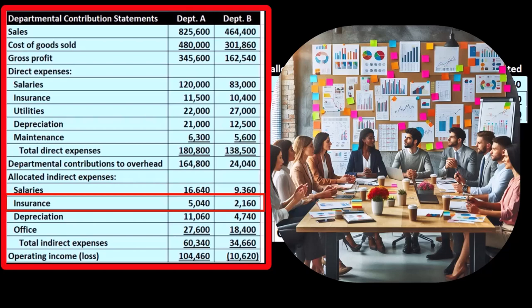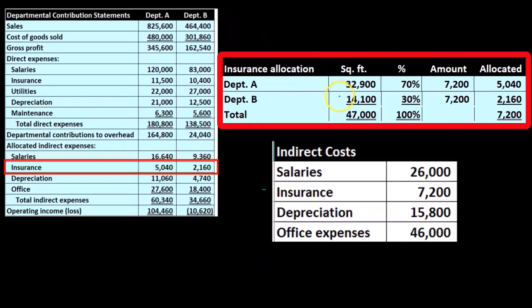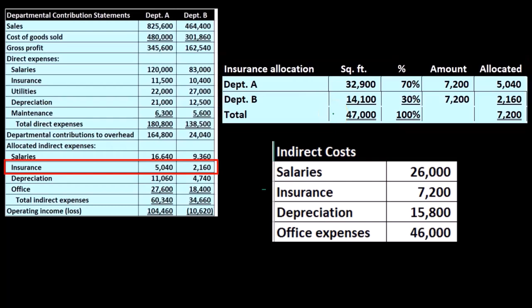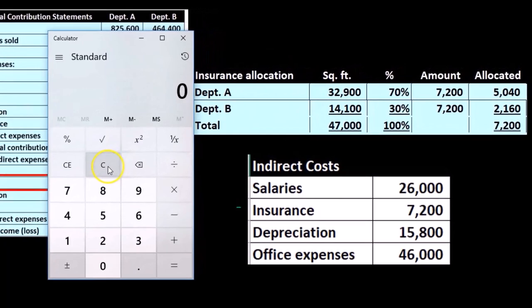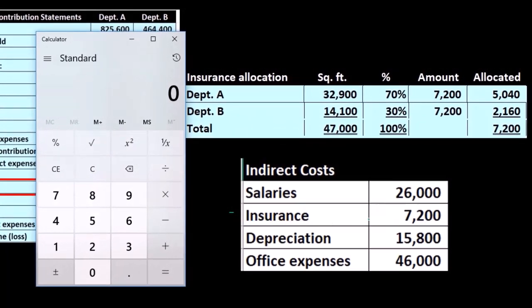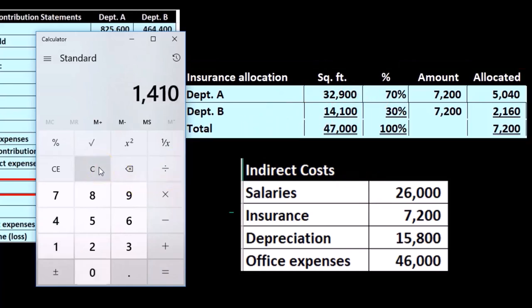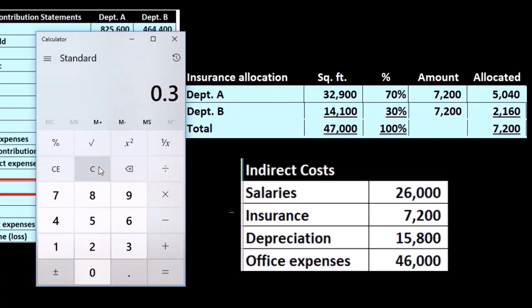We determined that square footage might be an appropriate way to apply out insurance. The square footage of the two places adds up to 47,000, so we can come up with percentages to apply out the $7,200. Taking 32,900 divided by 47,000 gives us 70%, and 14,100 divided by 47,000 gives us 30% — adds up to 100%.